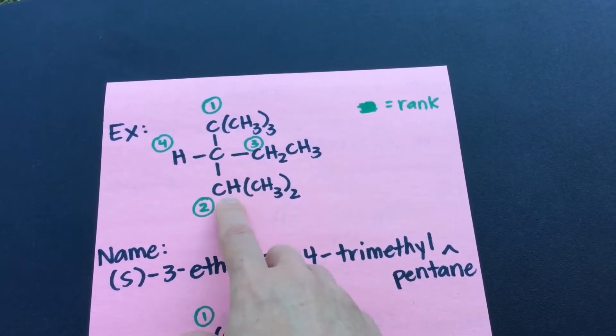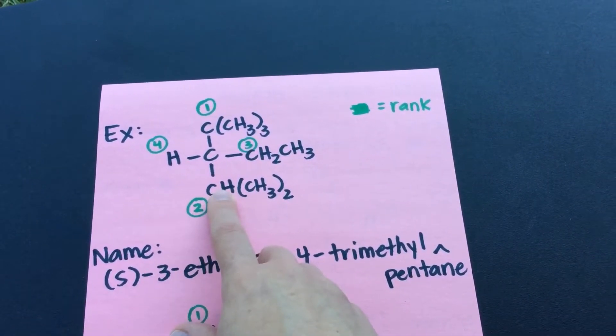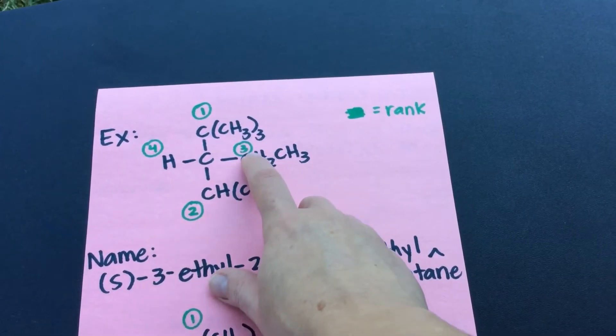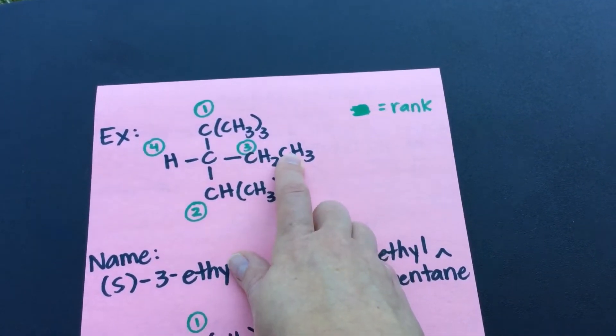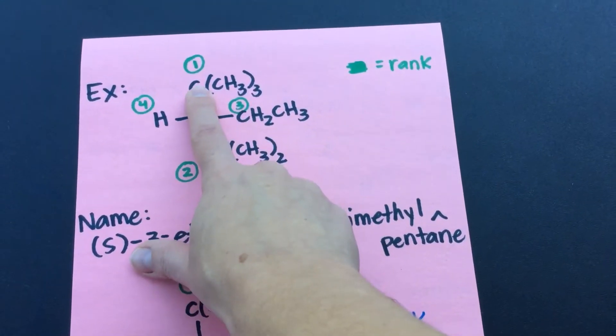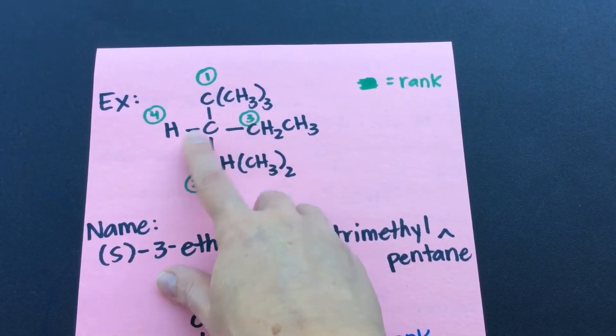This carbon is attached to two hydrogens and a methyl group. This carbon is attached to two methyl groups and a hydrogen. So this one on the top is going to rank the highest, right, because it's got methyl, methyl, methyl. This one will be second, methyl, methyl, hydrogen. You can think of it that way. This one is hydrogen, hydrogen, methyl, right? So rank goes here, then here, then here.